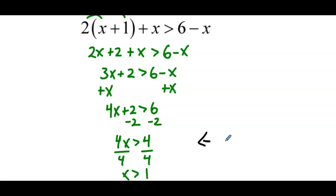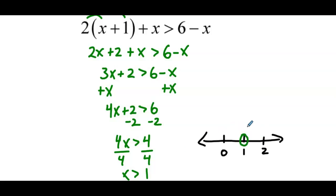Now we graph on the number line. We mark 0, 1, and 2. There is an open point on 1. Since x is greater than 1, the x values greater than 1 are 2, 3, 4, 5, so we shade to the right.